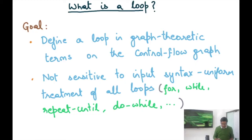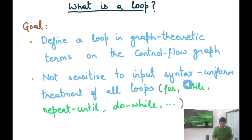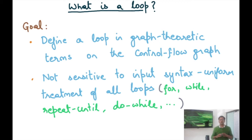We've been discussing how loop transformations are very important for compiler optimization, but before we talk about optimization of a loop we need to define what a loop is — in graph-theoretic terms on the control flow graph. We want to do that because we want a canonical representation of the loop, so we're not sensitive to input syntax like whether it's a for loop, while loop, repeat-until loop, or do-while loop. We don't want algorithms that work differently on different types of loops.